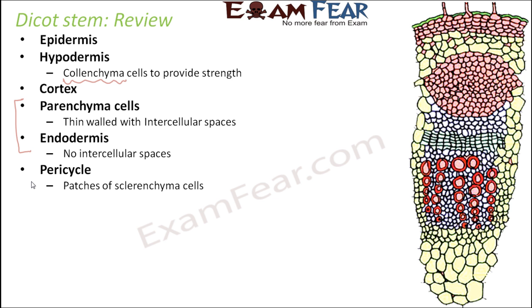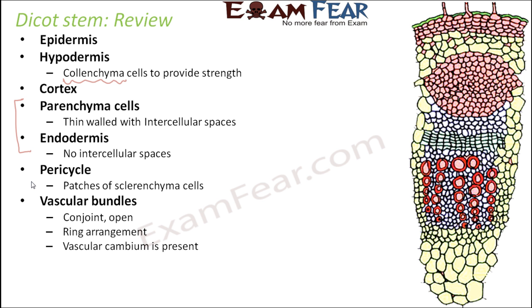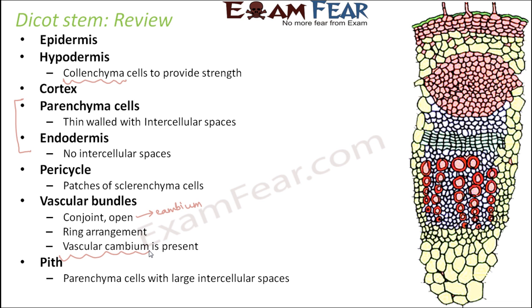Next is pericycle, which is patches of sclerenchyma cells and vascular bundles. Here the vascular bundles are conjoint and open because cambium is present. Vascular bundles are in ring arrangement, and vascular cambium is also present. Cambium is of two types: vascular cambium and cork cambium. Since we are talking about the cambium between xylem and phloem, which are the vascular tissues, this is our vascular cambium. Then you have the pith, which is made up of parenchyma cells with large intercellular spaces.